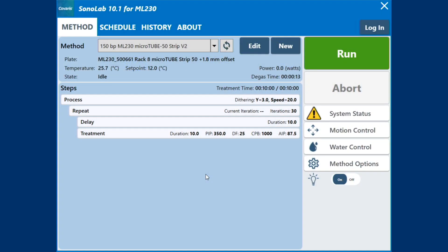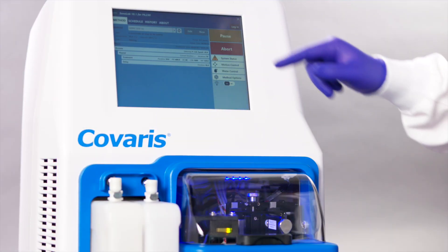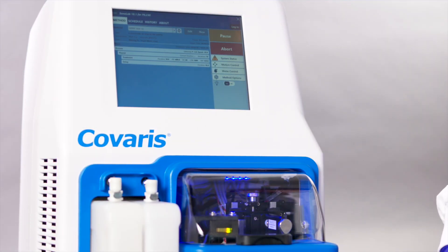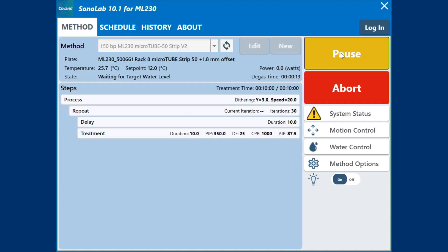When the Run button is green, the selected method may be started. Touch the Run button to start. The green Run button becomes a yellow Pause button and the Abort button turns red.